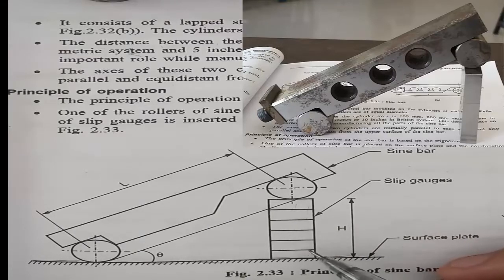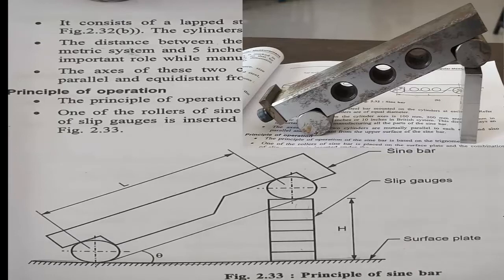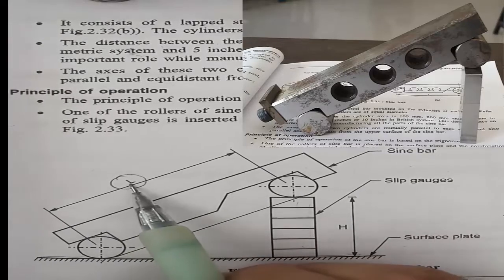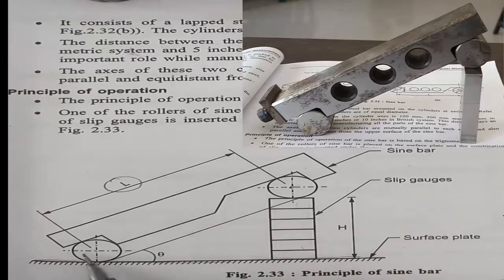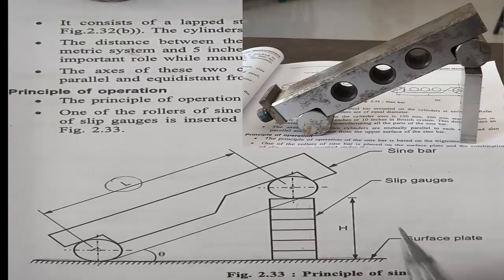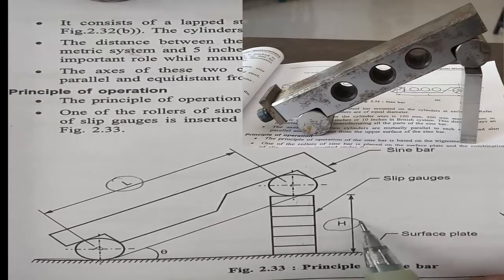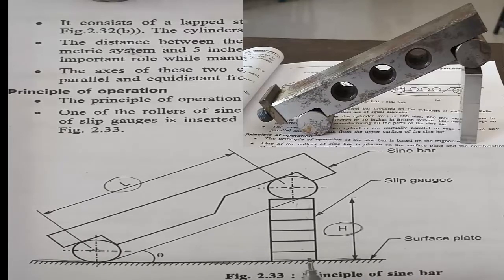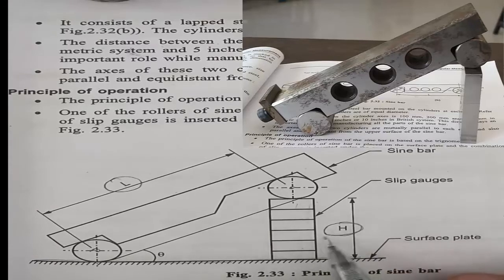We have to add slip gauges, like 30 or 20, over here. This distance L, the center distance, is fixed, and we know the height of the slip gauge because we have already used it and the measurement is written on it.